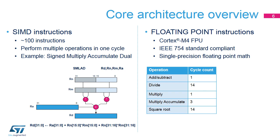SIMD techniques operate with packed data. For instance, two 12-bit samples acquired with the ADC can be stored in the two half-words of the same 32-bit register. In the example described in this slide, two pairs of samples are multiplied and then accumulated into a destination register. Since data signal processing is based on sums of products, SIMD instructions contribute to increase the performance with regard to regular scalar fixed-point instructions.